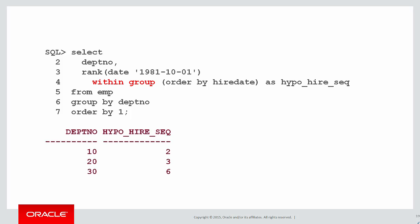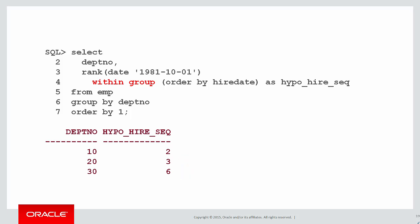We can see our result: if I was hired on October 1st, 1981, then I would be the second most recent hire in department 10, the third most recent hire in department 20, and the sixth most recent hire in department 30. It's a hypothetical ranking should that data come to be.